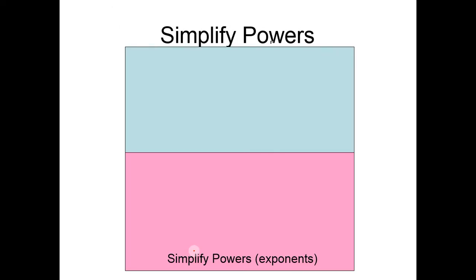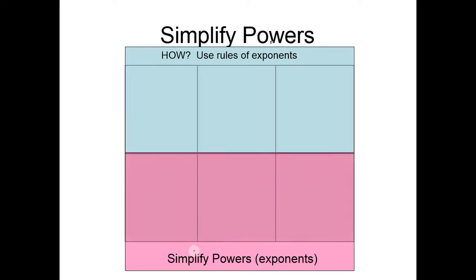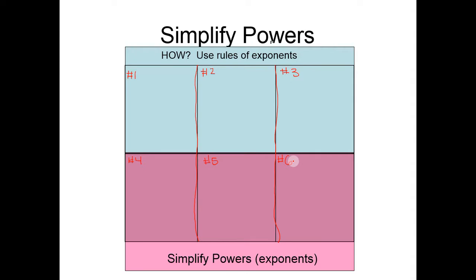This is what your current foldable looks like under the Simplify Exponents tab. What you're going to want to do is on the top, put 'how to use rules of exponents.' This is how we're going to simplify our powers — we're going to use the rules of exponents. Draw in these lines going up and down. We're going to have 6 different examples today, so you can label them number 1 through 6.